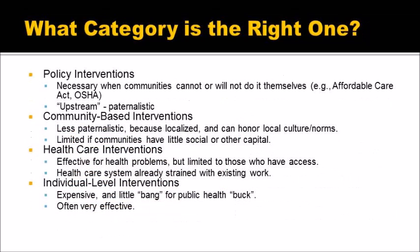What category or level is the right one for your intervention? Policy interventions are big, powerful things, like the Affordable Care Act and OSHA. These are necessary when communities do not have the capital or power to do these kinds of interventions themselves. These policy interventions are upstream and therefore paternalistic. So we would prefer community-based interventions, because these are less paternalistic, localized, and they can honor local customs and norms.